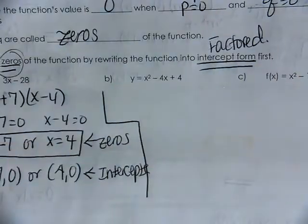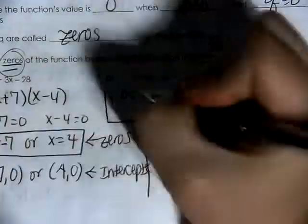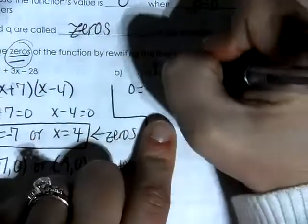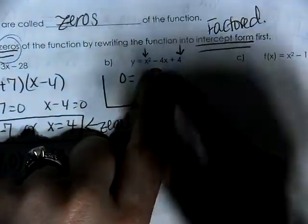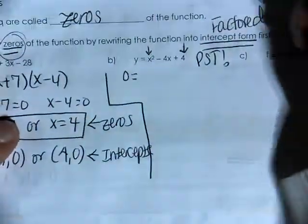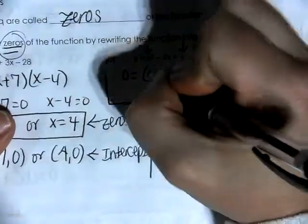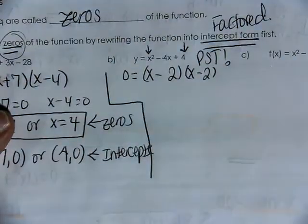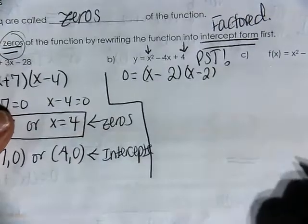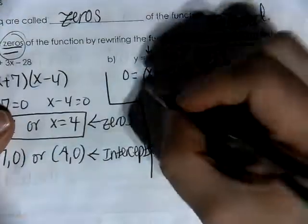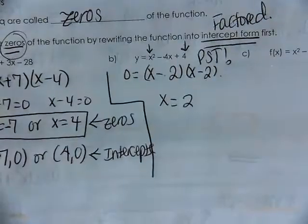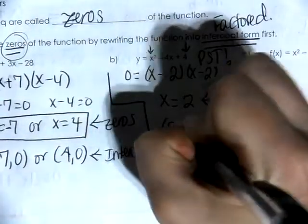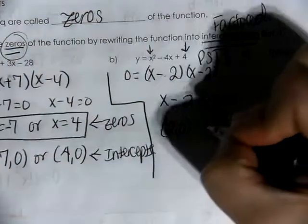For letter B, I replace y with 0. I have x squared minus 4x plus 4. My first term is a perfect square, my last term is a perfect square, my middle term is even — this is a PST. I break it into two parentheses with an x and a 2. Because my middle term is a minus, both are minuses. Because both parentheses are the same, my answer is simply x equals 2. This is our zero, and our x-intercept is 2 comma 0.